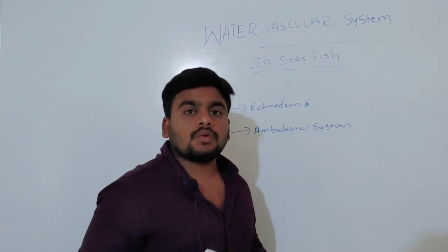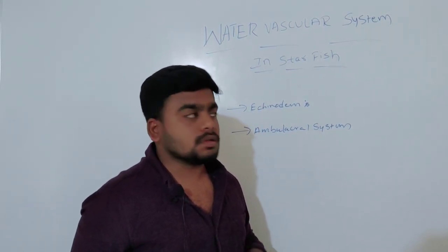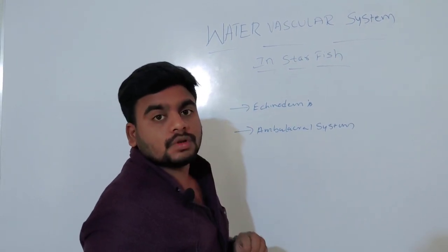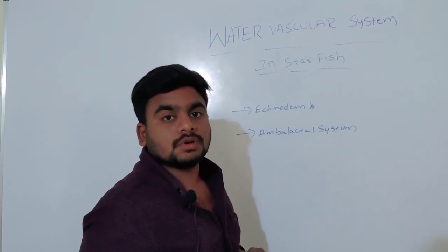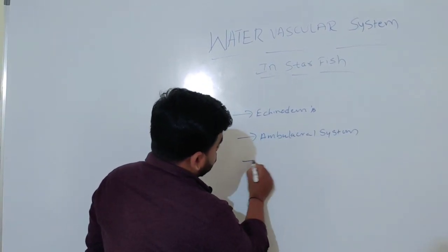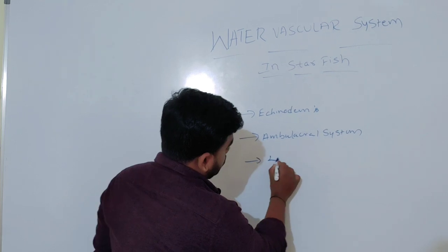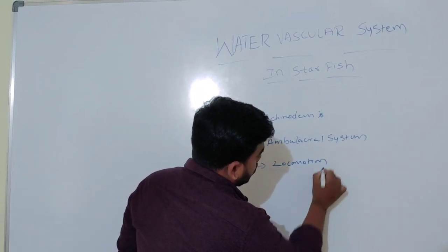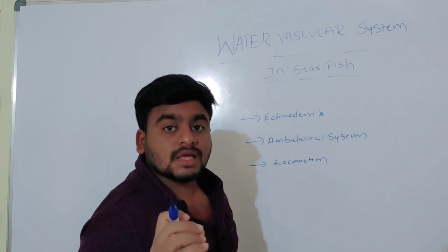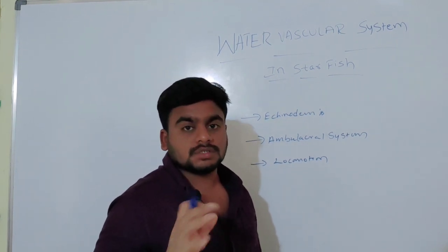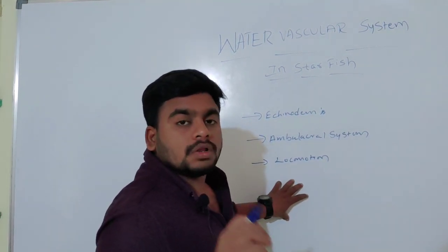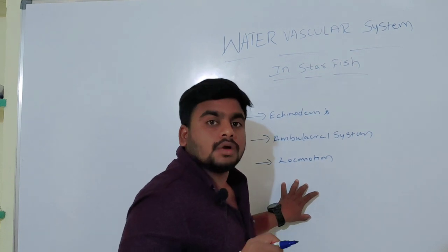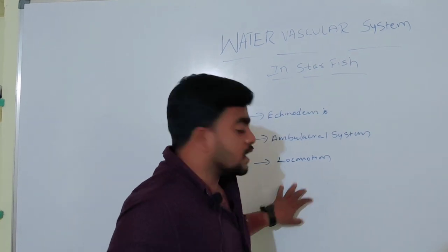What is the use of the water vascular system in starfish? This water vascular system is mainly used for locomotion in starfish, and also to maintain the turgidity in starfish.